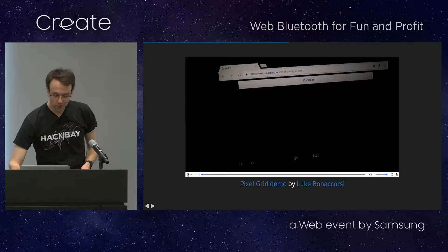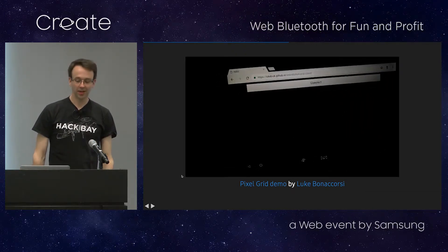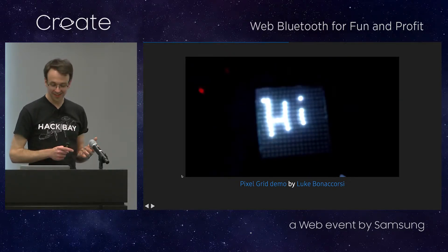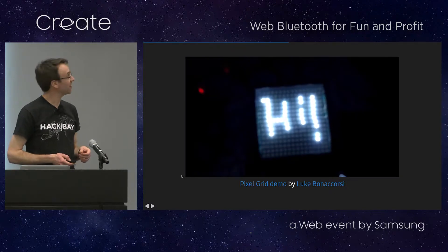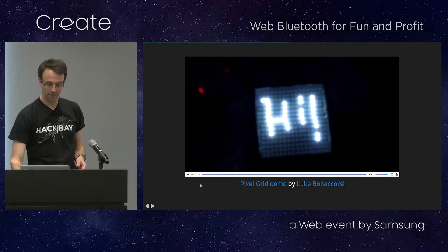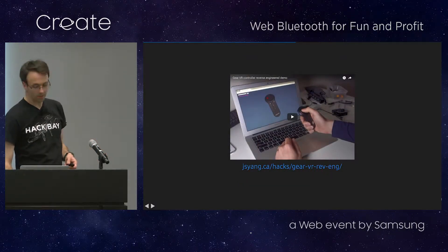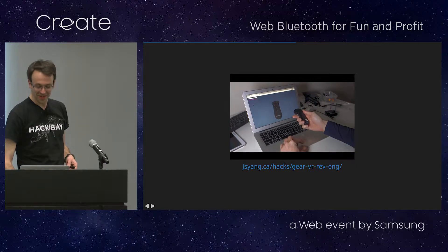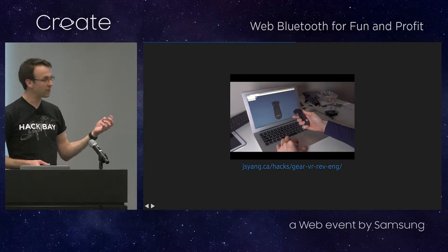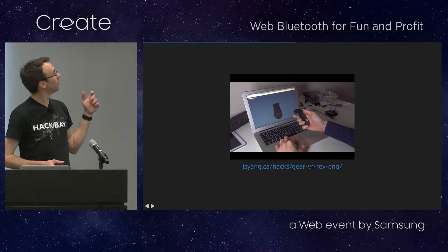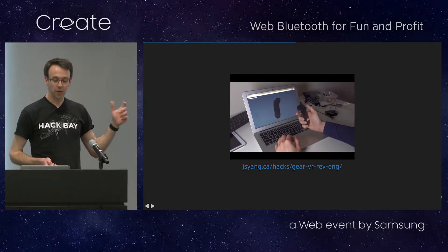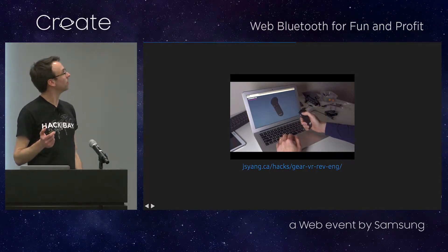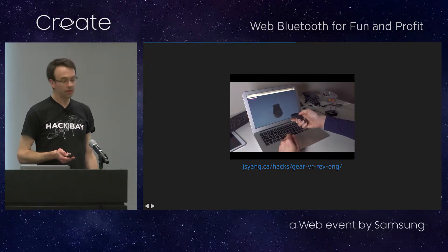Our friend Luke made a cool Web Bluetooth demo that connects with a grid of LEDs, and he can use this to draw using lights, just via a web page. And this is what someone had managed to do with our Gear VR controller — they've integrated it with Web Bluetooth so that a web application, just a web page, shows the orientation and shows the clicks or touches on the controller. You can use this for games or controlling other things on websites.